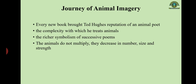Every new book brought Ted Hughes the reputation of animal poet because of the complexity with which he treats animals — it's not just graphic representation but complexity of thought. The symbolism in successive poems was richer. Interestingly, the animals do not multiply — the number of animals actually decreased rather than multiplied in his later work, and they also decreased in size and strength.